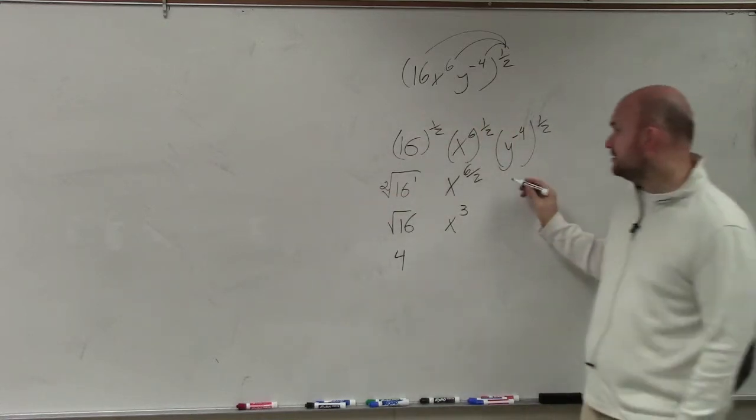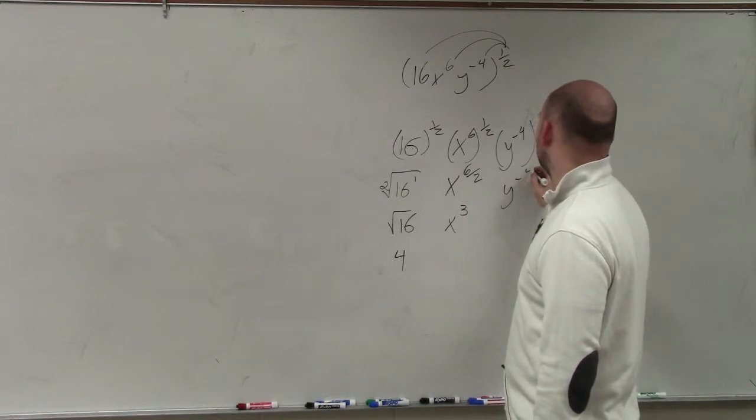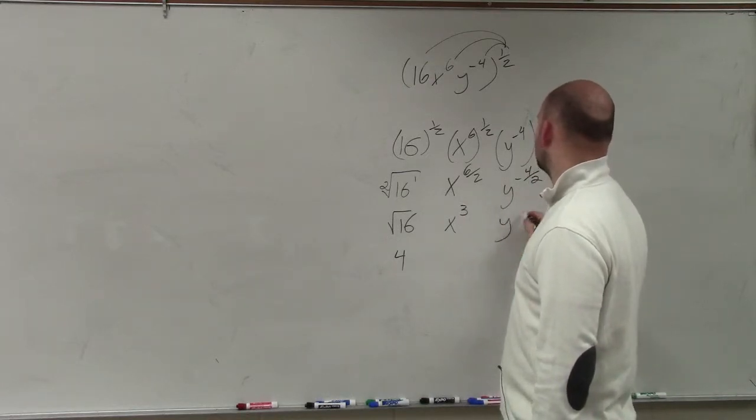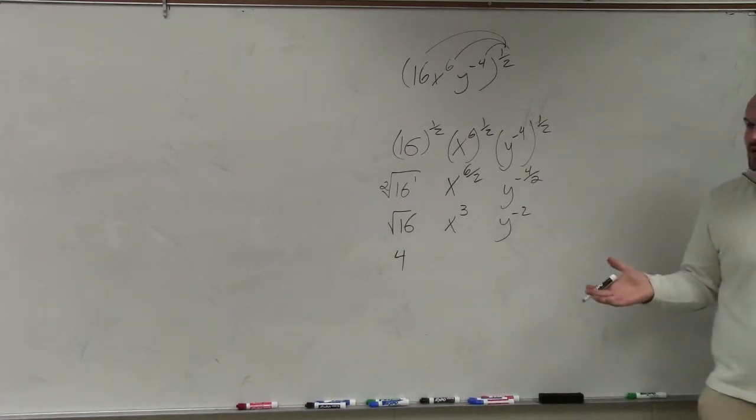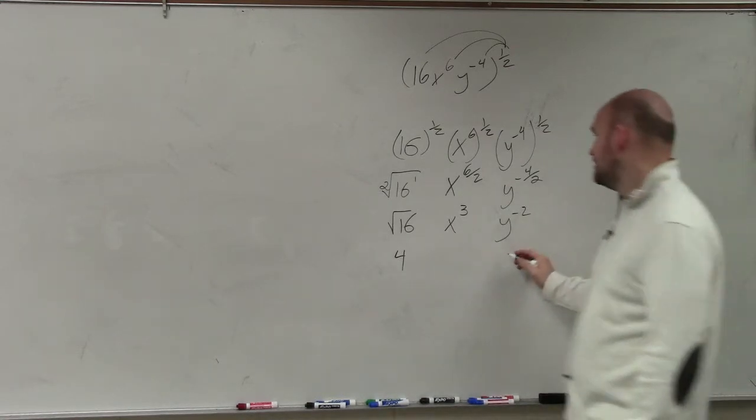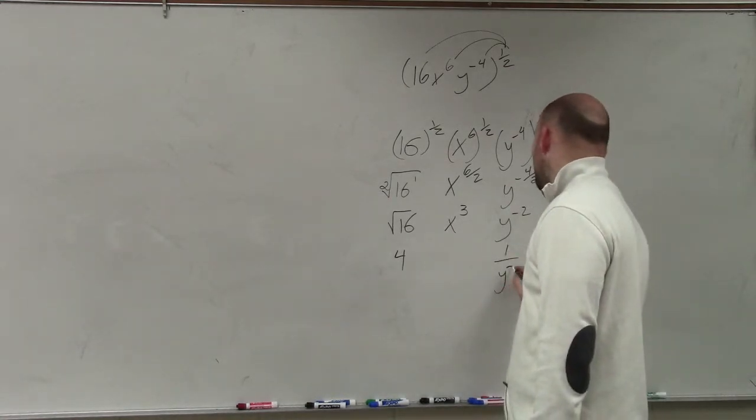And then over here, this becomes y to the negative 4 over 2, which is y to the negative second, which again, we went over. What do we do when we have negative powers in the numerator? We now have to write them in the denominator. So this would be 1 over y squared.